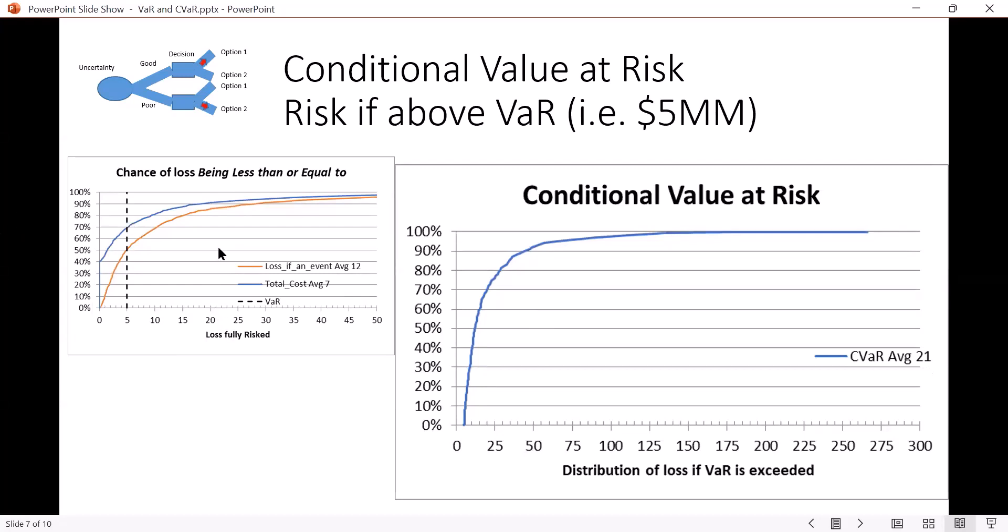So if we come out here to 21, this area here is equal to that really long tail and adding up all those areas. And we can see that this distribution of the CVaR with the expected value of 21 starts at five because our value at risk is five.